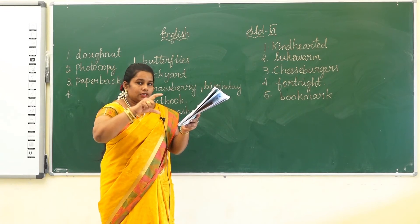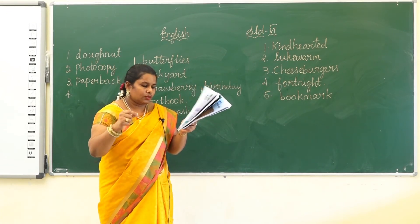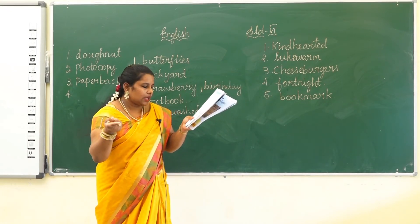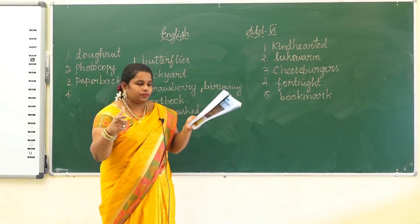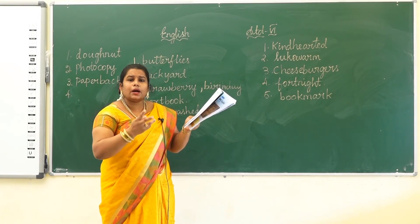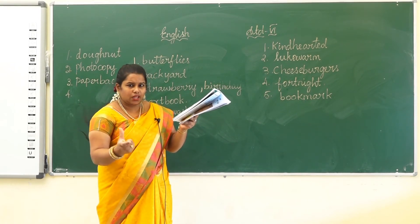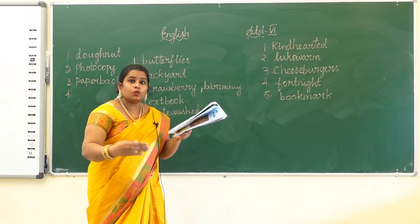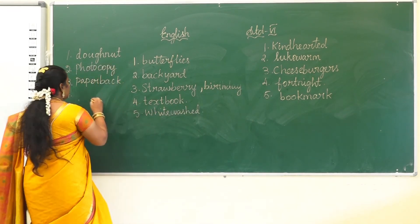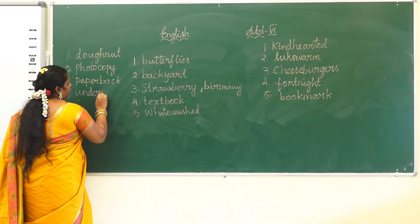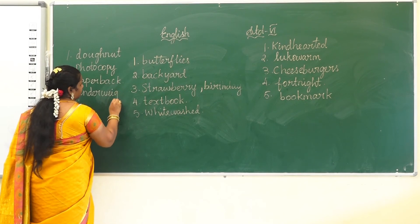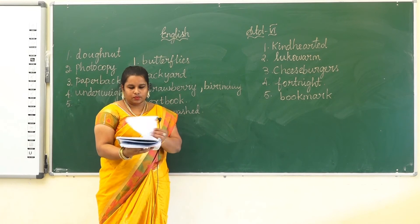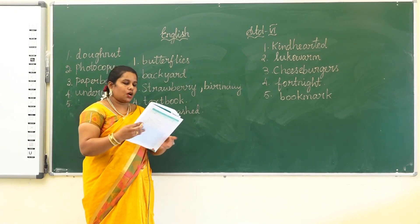Fourth pair: the first picture shows a table with an arrow pointing down, and the second picture is a weighing machine. Combining these gives us underweight. Both components form the compound word underweight.